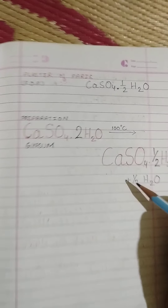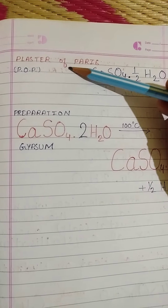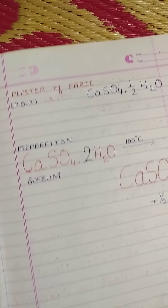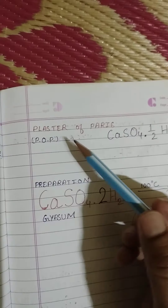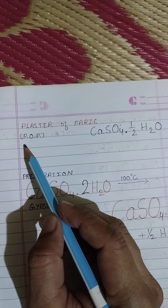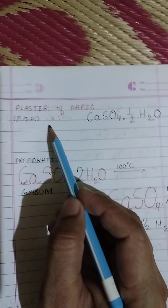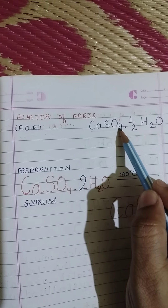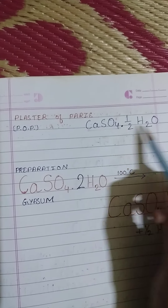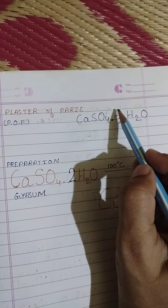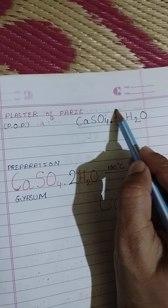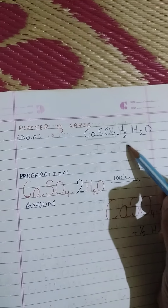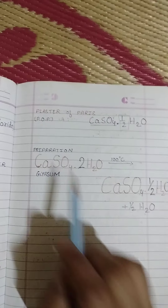Hello students, the next very important salt is Plaster of Paris. You might have heard the name POP, which is used for making modeling statues etc. The formula of POP is CaSO4 hemihydrate, meaning this CaSO4 has half a molecule of water in its crystal.